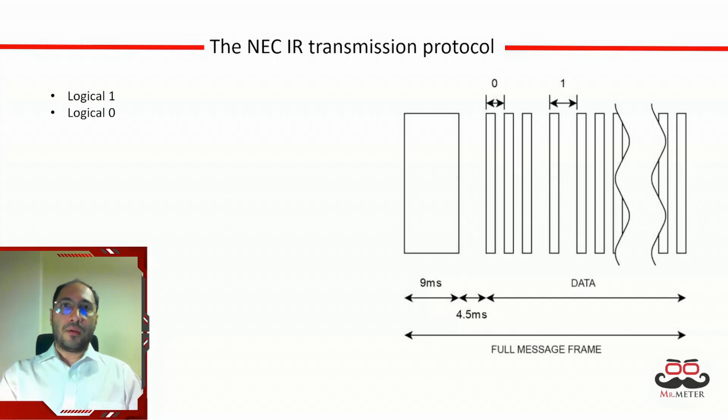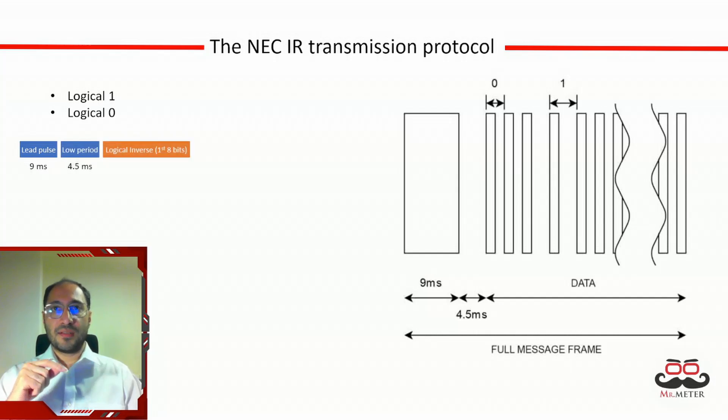The full message frame in this protocol starts with a nine millisecond leading pulse burst followed by a 4.5 milliseconds low period. Data will be transmitted next which consists of an 8-bit address of the device, which includes the logical inverse of the first 8 bits, the 8-bit command and the logical inverse of the command bits, and finally a final 562.5 microsecond burst to signify the end of the message.